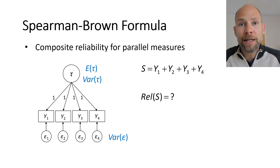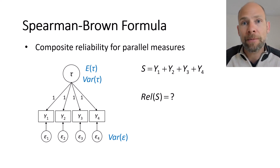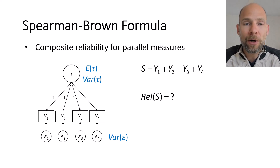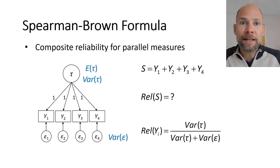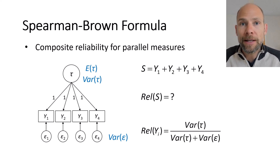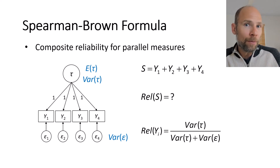Assuming this model fits your data well — meaning the measures are strictly parallel, unidimensional, measure the exact same true score variable, and have the same measurement error component — you can use the Spearman-Brown formula. The measurement model gives us an estimate of the reliability of each component yi, which is equal to the variance of tau divided by the variance of tau plus the common error variance, variance epsilon.